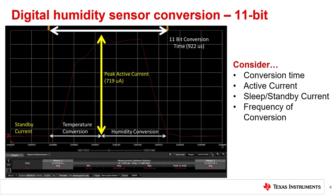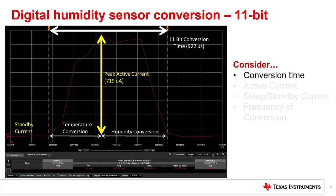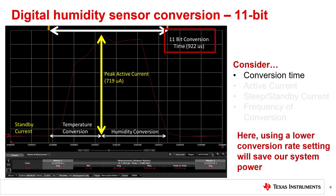Here is a power meter capture of an 11-bit temperature and humidity conversion from the same HTC2 sensor. If we look only at the active current, sleep current, and consider the same frequency of conversion, then not much has changed. Swapping to an 11-bit conversion does, however, change the active conversion time and narrow the current pulse width considerably — from 1300 microseconds to around 900 microseconds. This shorter conversion time can be used in cases where system power consumption needs to be optimized, such as in battery-operated applications.